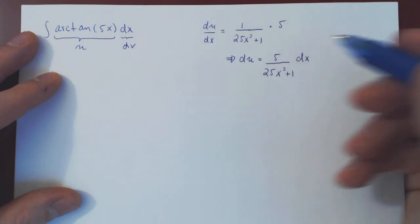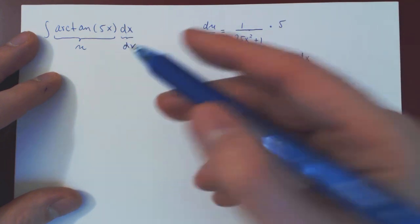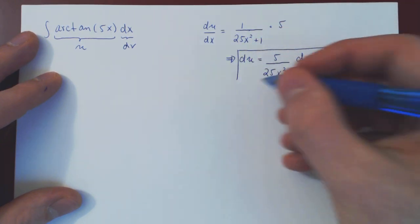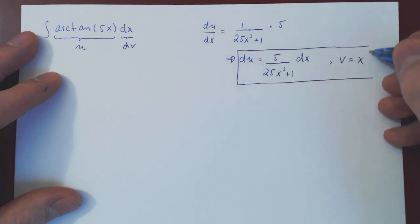V is trivial, right? V is the integral of dv. If you integrate dx, you get x. So v is quite simply x. So now we have all we need to apply by-parts.